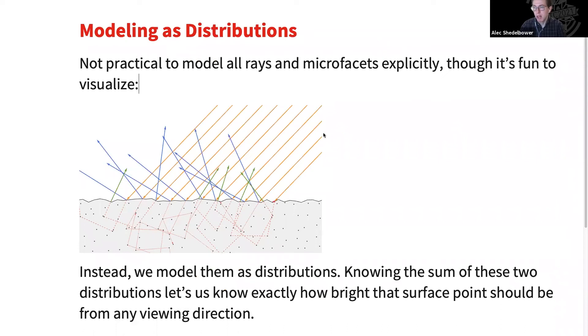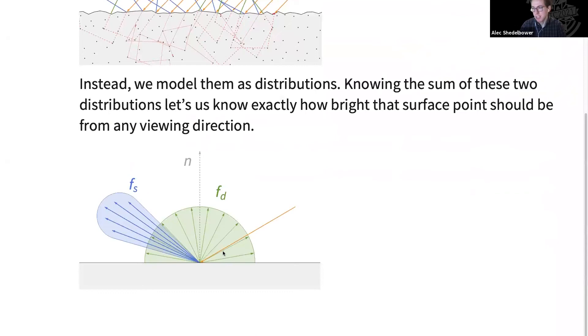So it's not practical to try to model the interaction between all of our rays and all these micro-facets directly. Even if it's kind of fun to visualize here. Instead we model them as distributions. So in this example you can see we model the diffuse light as this hemisphere around the hit point. And then we also have this more directed specular lobe following the ideal reflected direction. And then if we know these two distributions and can sum them together, we can then know how bright a surface point is from any viewing direction, which is exactly what we need to know in order to shade things in our renderer.